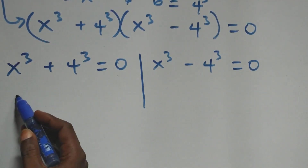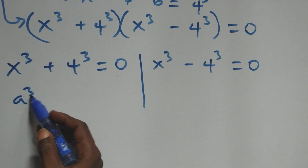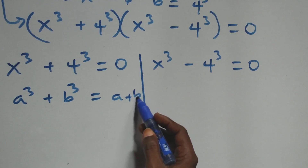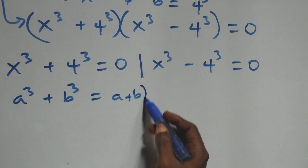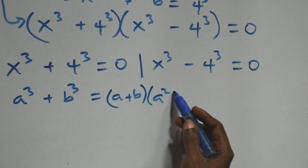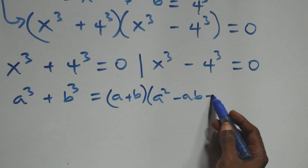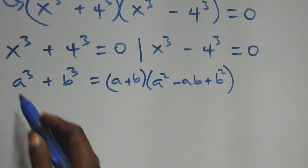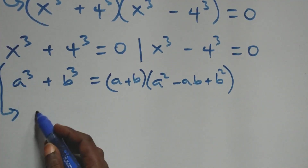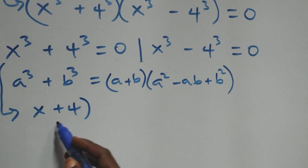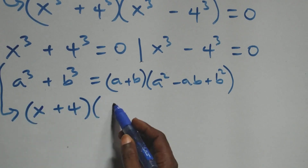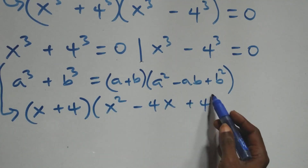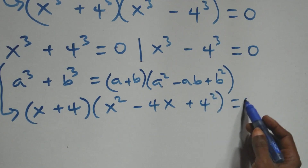Solving the first case, we follow that a raised to the power three plus b raised to the power three is the same as a plus b, into brackets, times open brackets a squared minus ab plus b squared. Applying this, it becomes x plus four, into brackets, then open brackets x squared minus four x plus four squared.